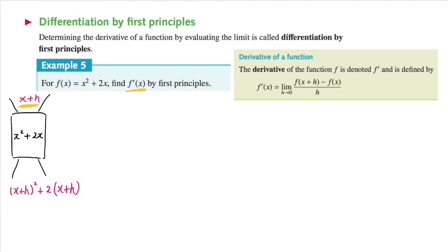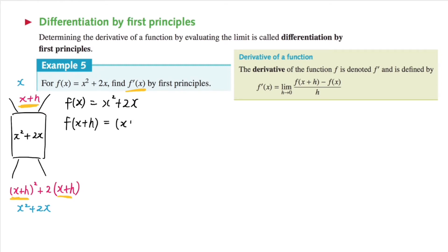So it becomes x plus h squared plus two times x plus h. You need to make sure that you're substituting x plus h — this whole expression — into the brackets, replacing x with this expression. It's not a single number; every time you see x, x becomes x plus h. And when the input is x, the output will just be f of x, which is x squared plus two x. So when the input is x, the output will be x squared plus two x, and when the input is x plus h, the output will be x plus h squared plus two times x plus h.